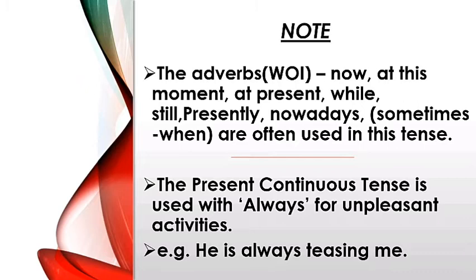Another point: present continuous tense is used with 'always' for unpleasant activities. Always ke saath, jab activity achi nahi hoti, hamesha achi nahi lagti, uske liye use kiya jata hai. For example: He is always teasing me — woh hamesha mujhe chidaata rehta hai.